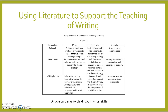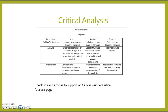We'll also be spending time on critical analysis, which is due on April 16th. There are checklists and articles on Canvas under the Critical Analysis page to help support that. You'll be choosing two different pieces of children's literature and describing each in light of either the critical literacy perspective or the critical multicultural analysis — you can choose which one. Then you'll be doing a presentation in class based on those two pieces.